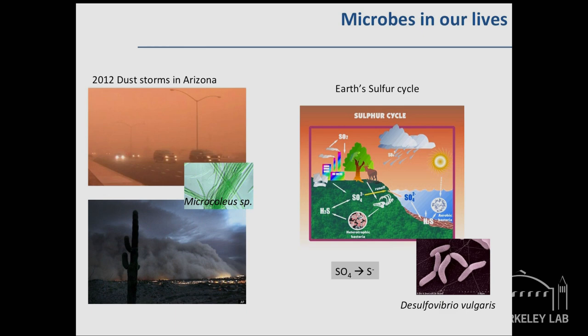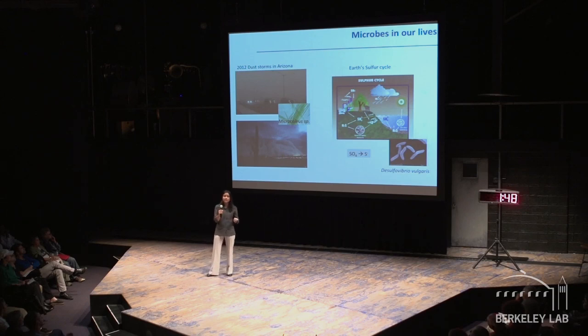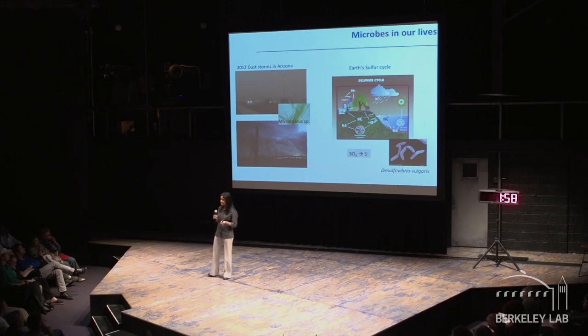So I'm showing you some images from Arizona from 2012, where there were these horrible dust storms. Completely brought life to a standstill for a lot of people. And this primarily happened because we destroyed this beautiful, elegant cyanobacteria that form these mantles over the desert holding it down. These are biological soil crusts. They were alive and we did a lot of damage in the desert causing these dust storms.